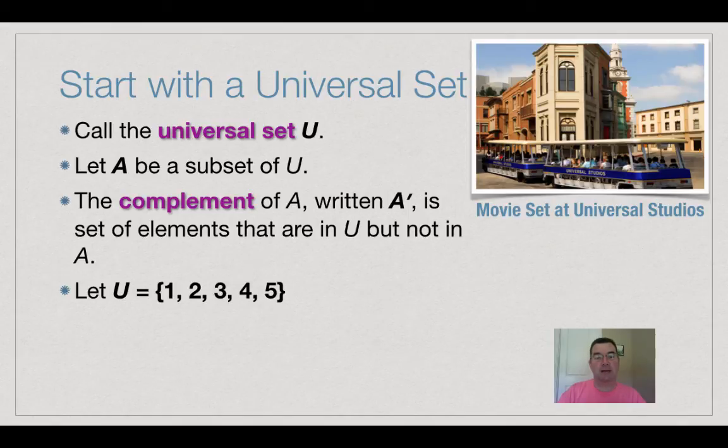if U was this universal set of the numbers 1, 2, 3, 4 and 5, if A was the numbers 1 and 3, that is a subset of that universal set,